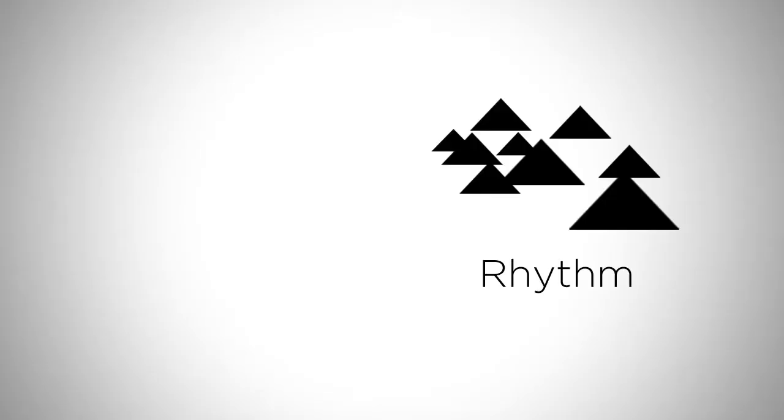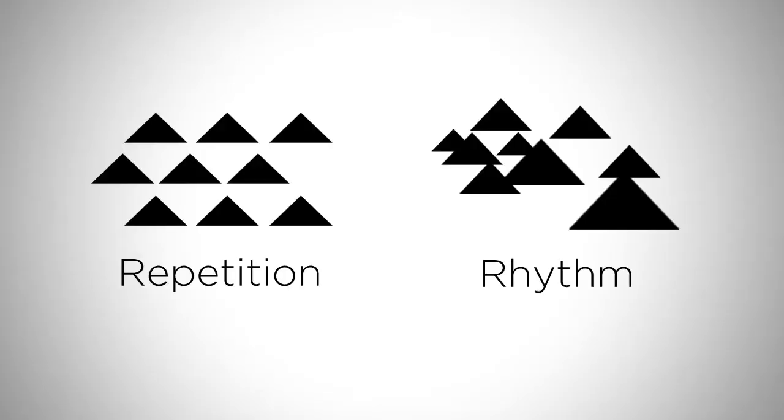Hey guys, this is Matt Kaur from ControlPaint.com. The principles of design are simply visual tools that help you structure your images. You may have heard of today's principles — rhythm and repetition — in terms of music, but they've actually got visual meanings as well. We'll start off with the most basic of the two, which is repetition.